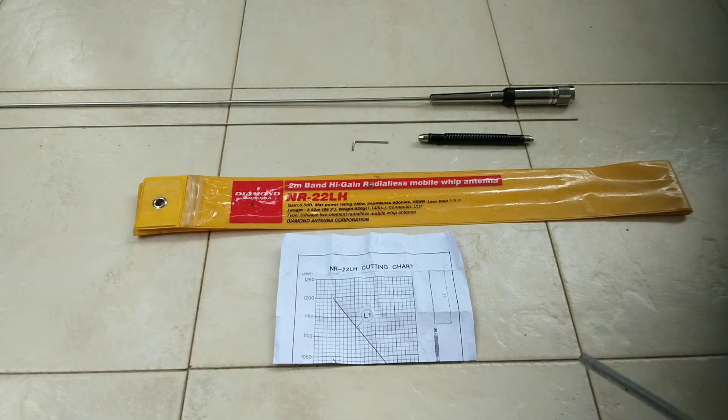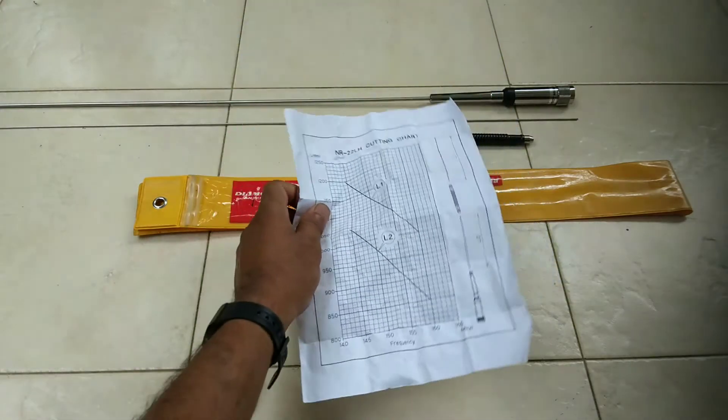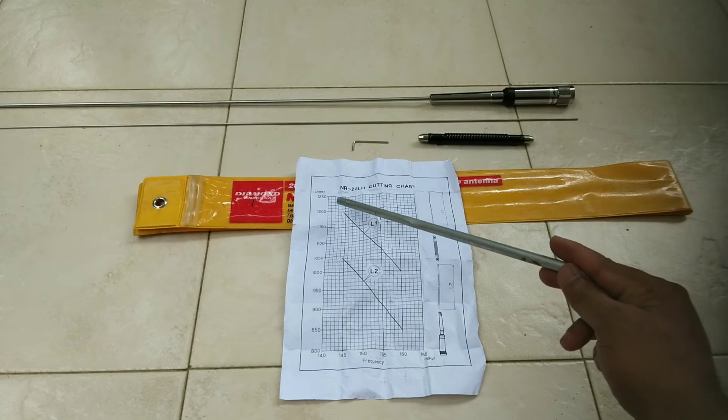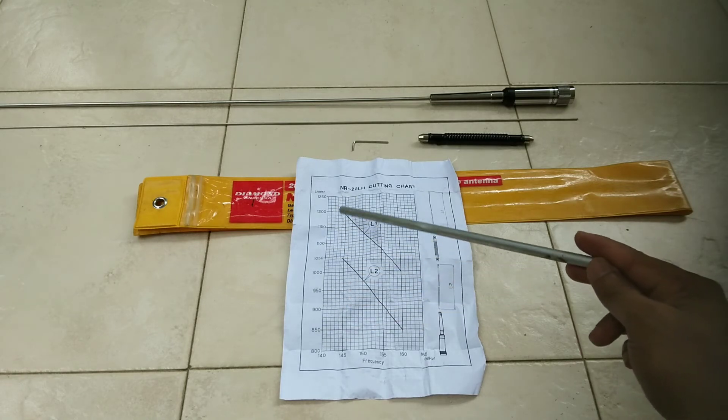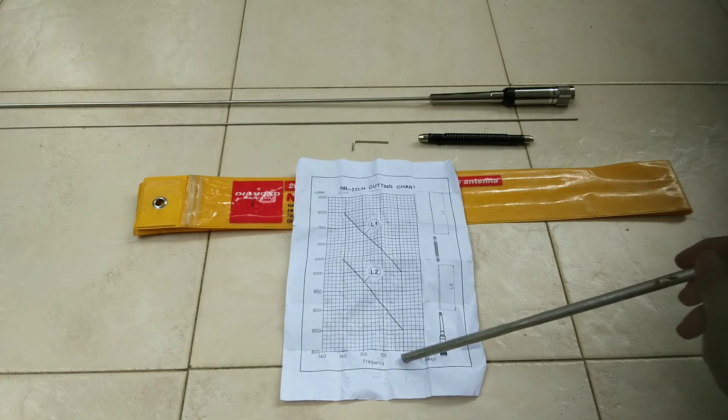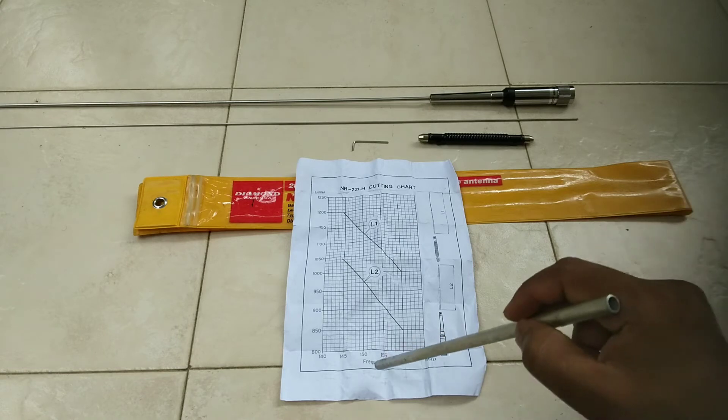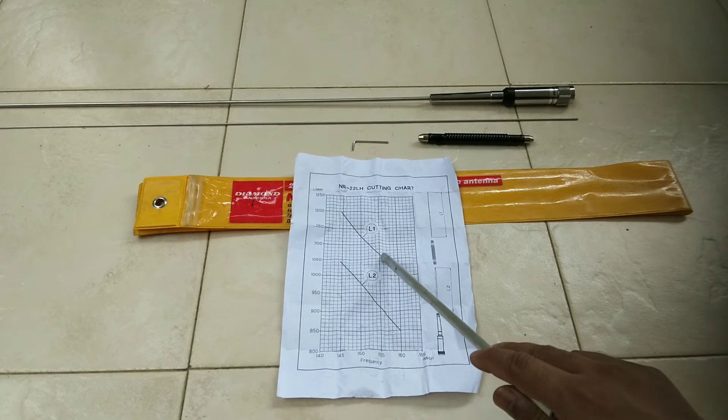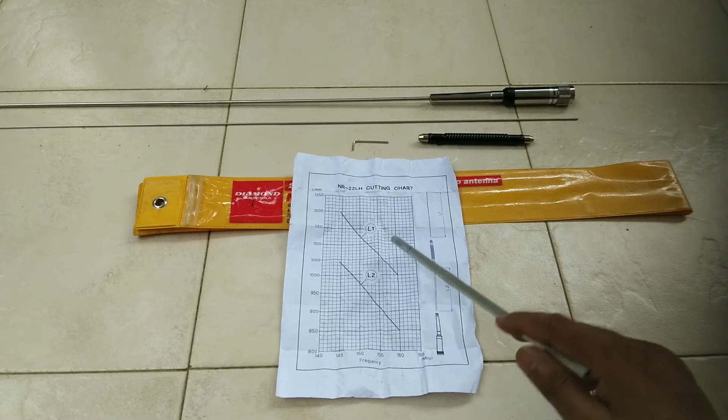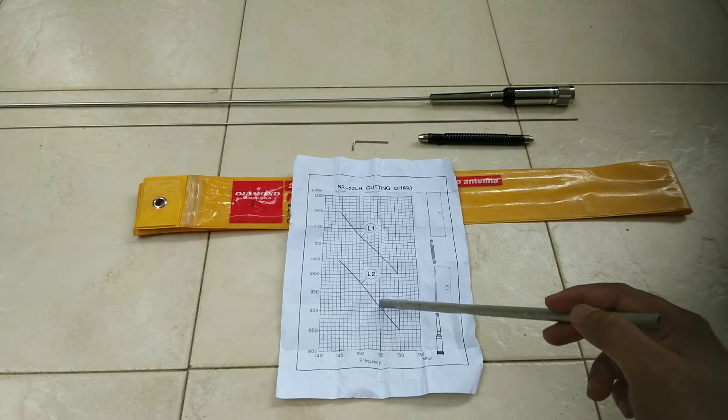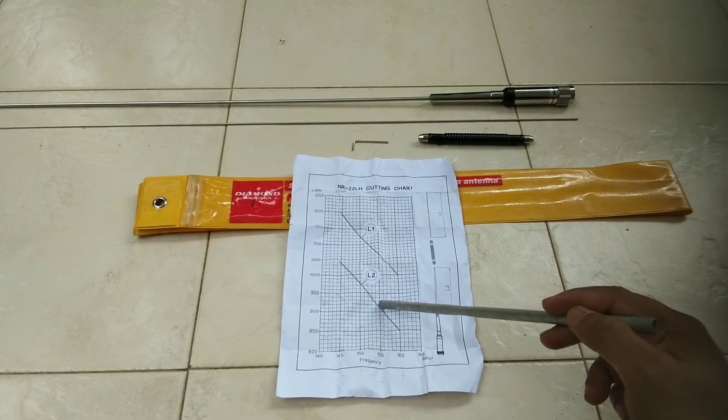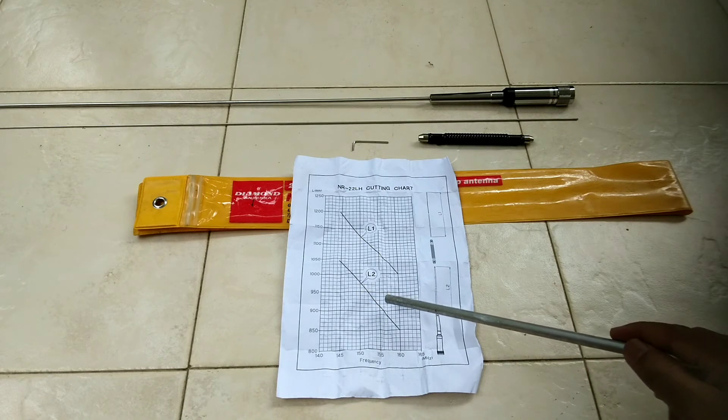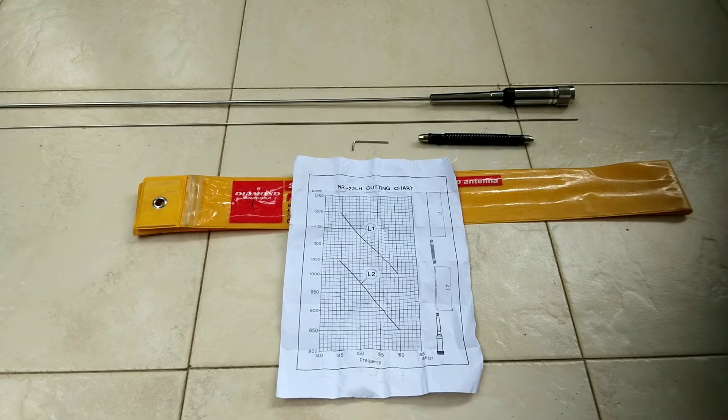And the same way it's coming with the cutting chart. On the factory tuning you don't need to do much cutting, but if you want to change the frequency you can cut. This is the length of the element and this is the frequency response. So for example if you want to cut the antenna for 155 MHz, L1 you have to cut it accordingly, and L2 you have to cut around 910 cm. So that is that basically.